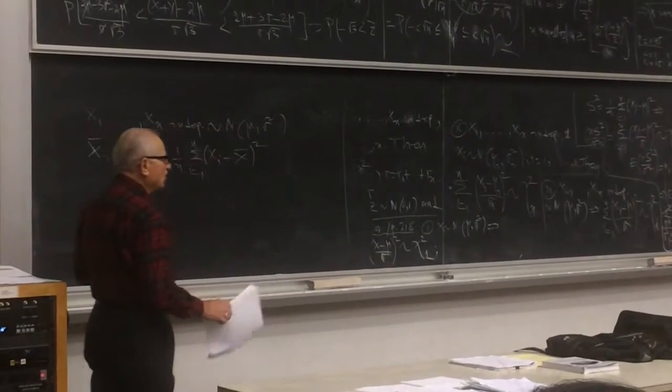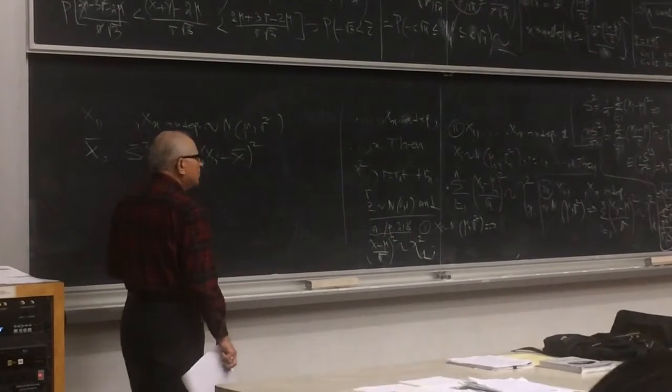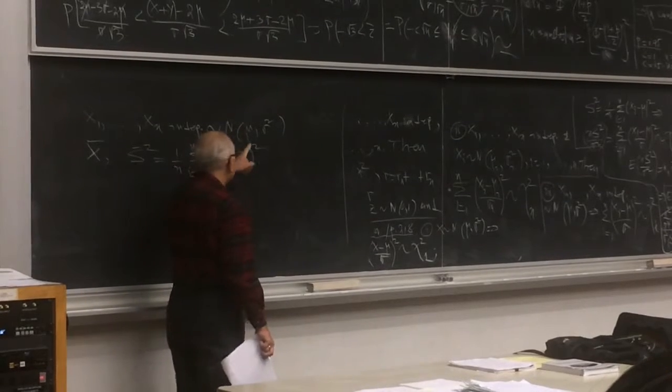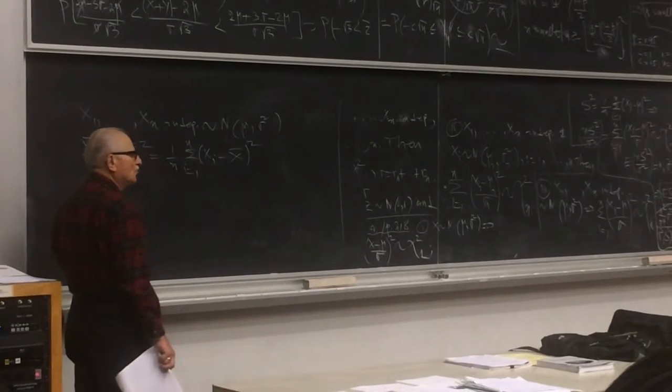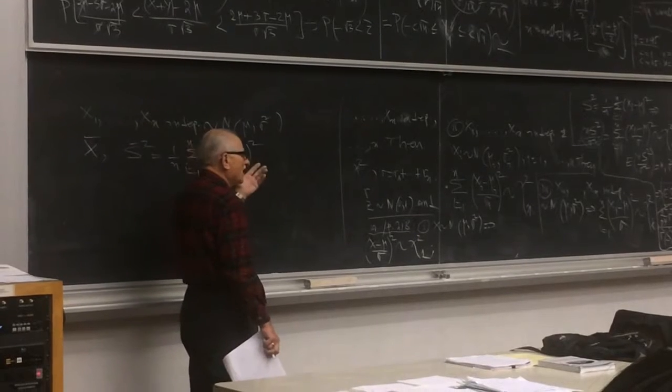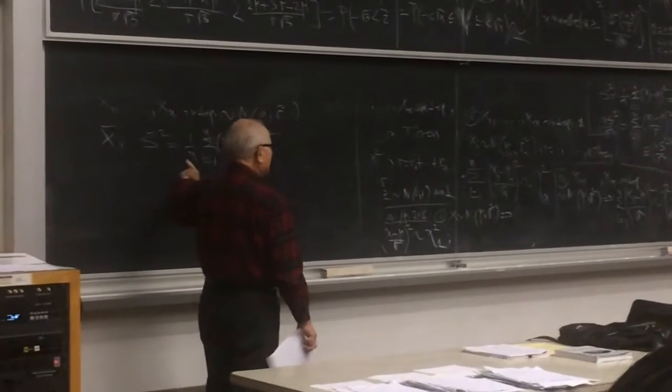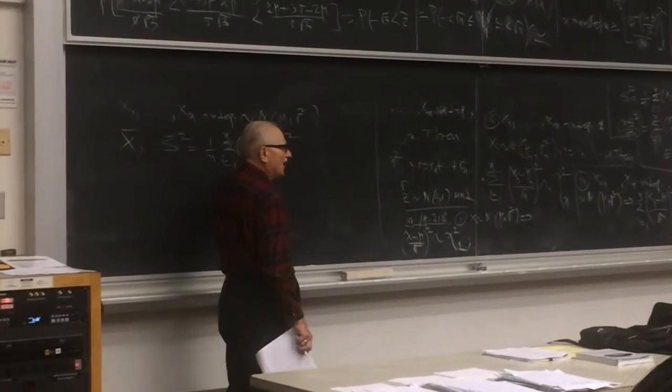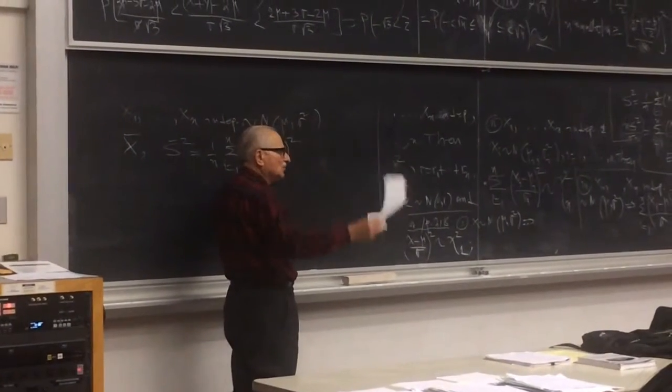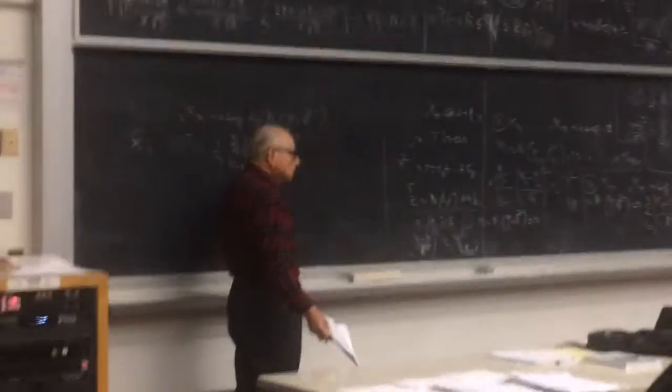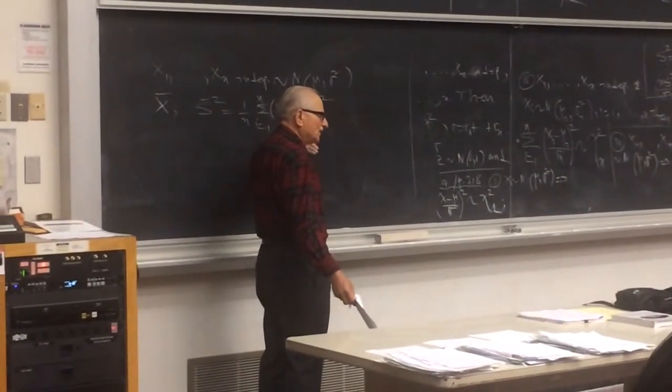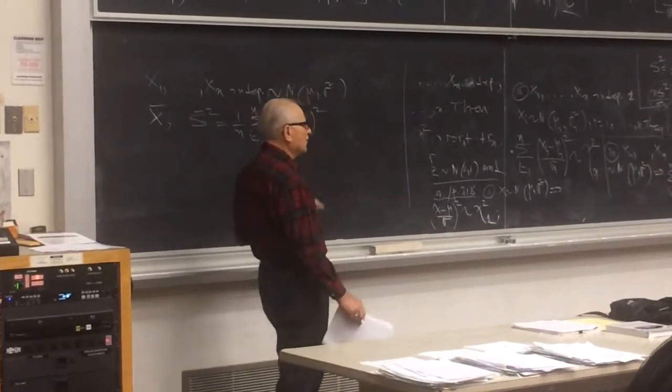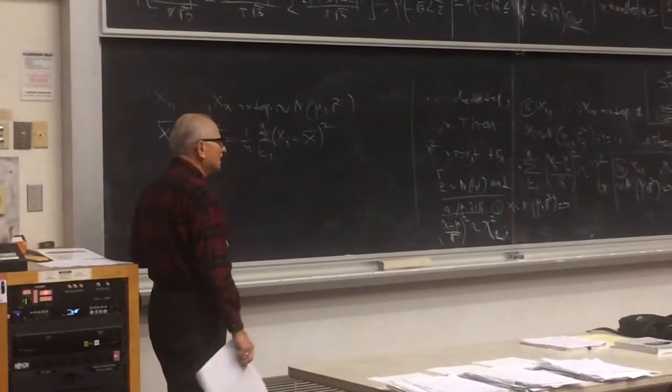We have to estimate those parameters. The usual estimate for the parameter nu is x-bar, something that we know. What about sigma squared? A usual estimate is this, some variable. If it were nu there, the way it was earlier, it would be useful. Could not use it because there is an unknown quantity there. Well, replace that unknown quantity by something that you know.